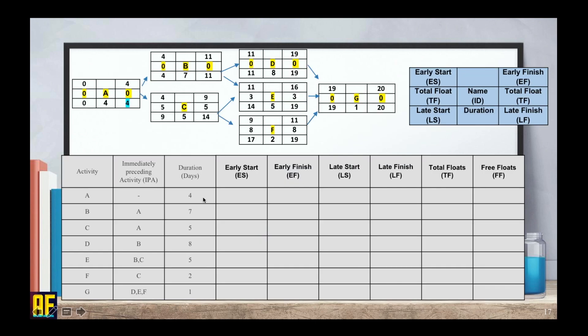So let's take our node table. Here is our activity and IPA and duration. This is all given in the question. And here is my information for activity A.